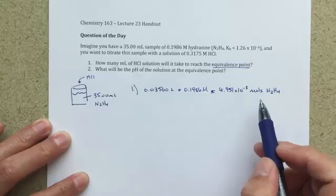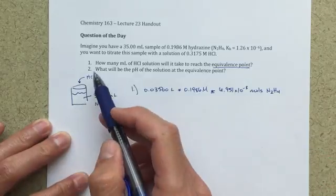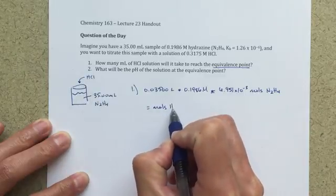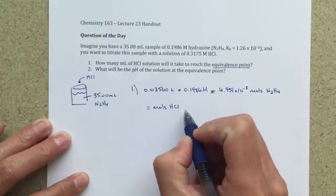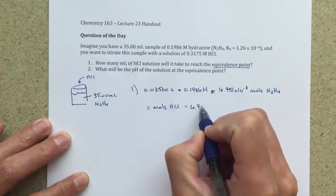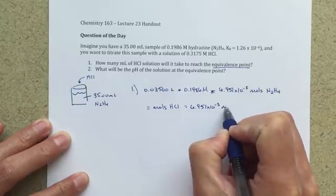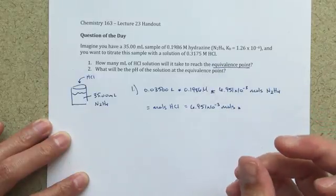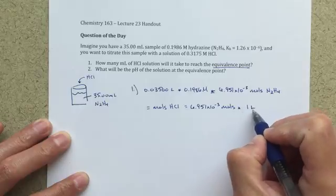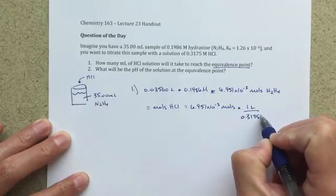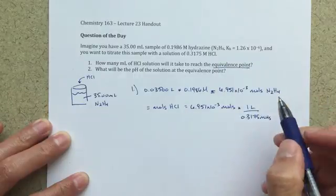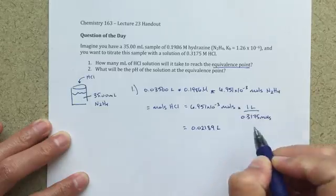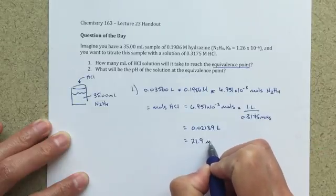So this number of moles, that's going to be what is present in this solution. And I'm going to need to add the same amount, same number of moles of HCl. And if I know my number of moles of HCl is equal to 6.951 times 10 to the minus third moles, and I want to convert that using this molarity to figure out how many liters or milliliters of that solution I'm going to need to add, I can just write that out as one liter over 0.3175 moles. So that's going to equal 0.02189 liters, which is equal to 21.9 milliliters.